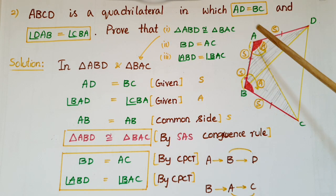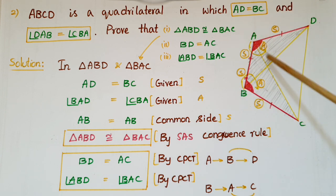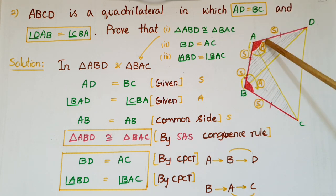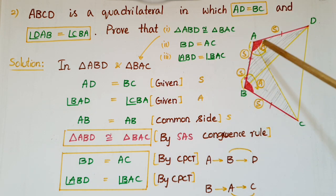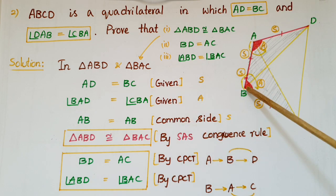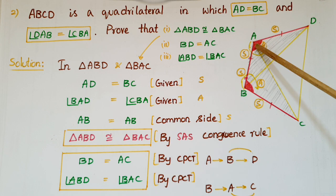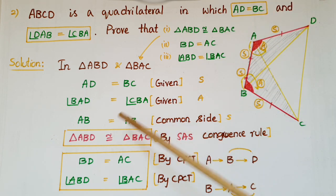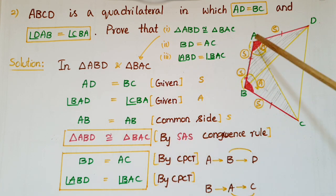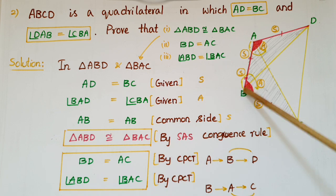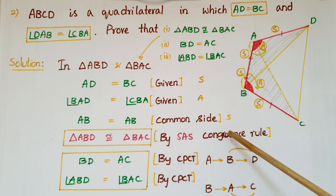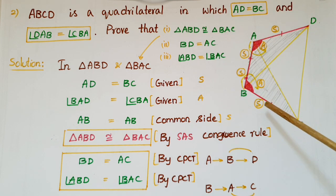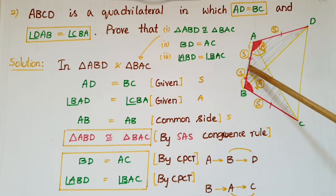In triangle ABD and triangle BAC: AD is equal to BC, that is given. Angle BAD is equal to angle CBA, that is also given. And AB is the common side for these two triangles — this is the common side. So AB is equal to AB. Therefore, triangle ABD is congruent to triangle BAC by SAS congruence rule, because side-angle-side of this triangle are equal to the corresponding side-angle-side of this triangle.